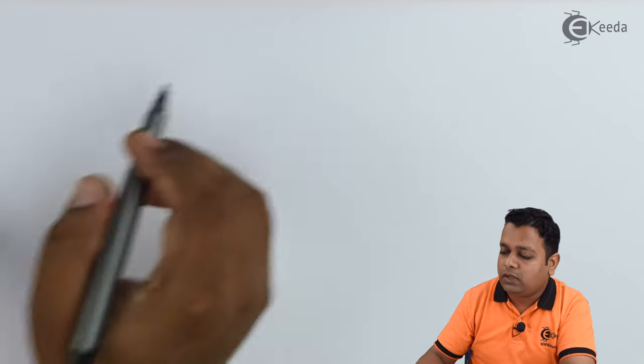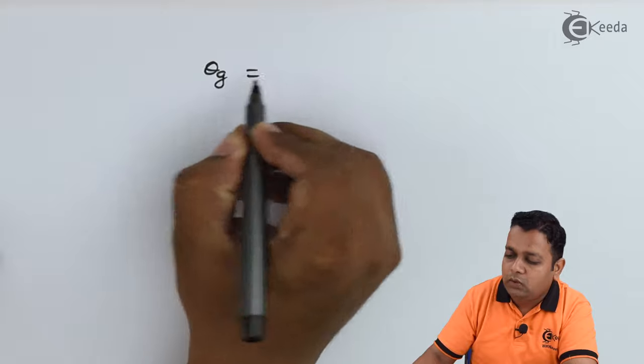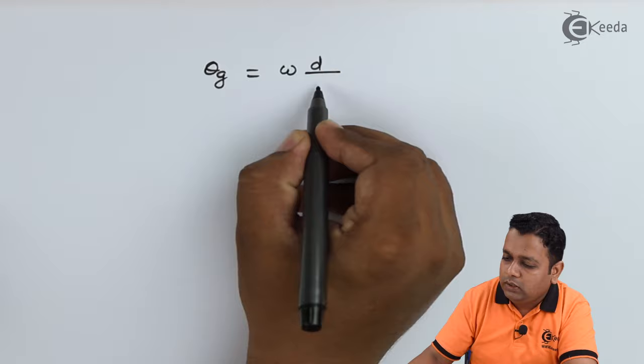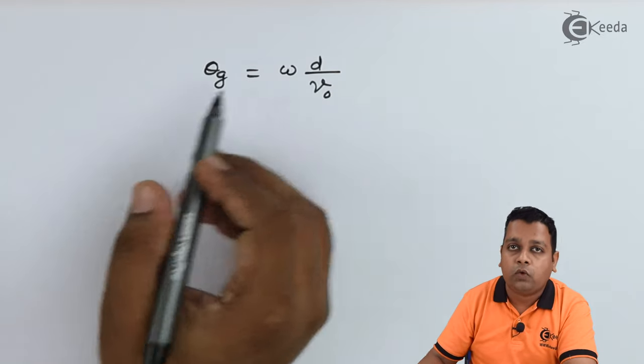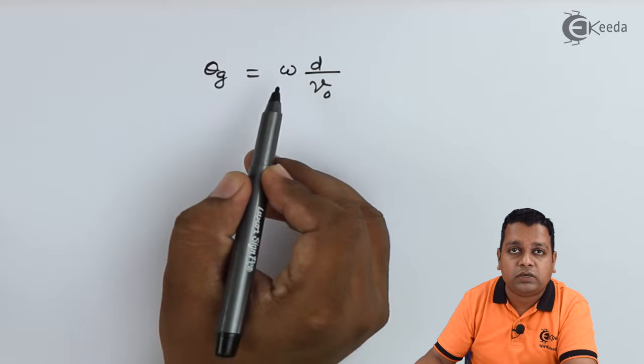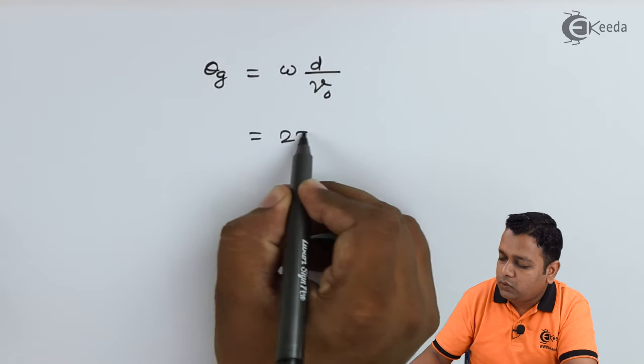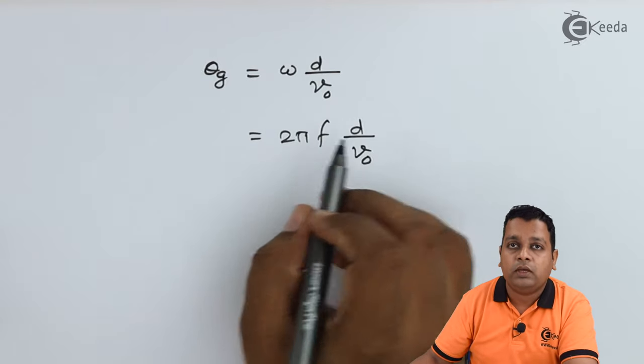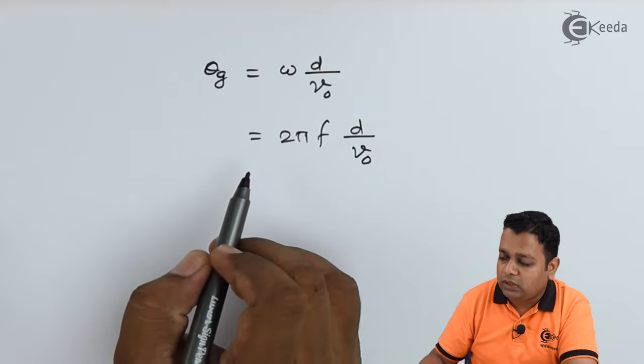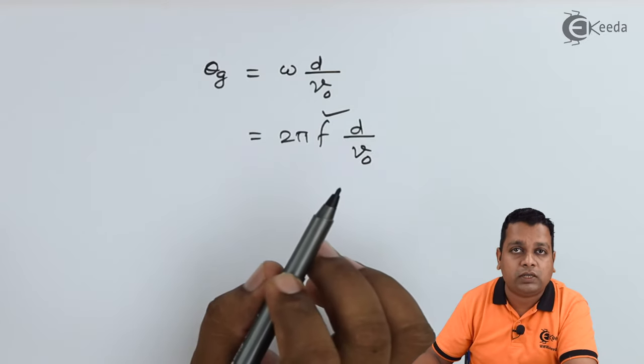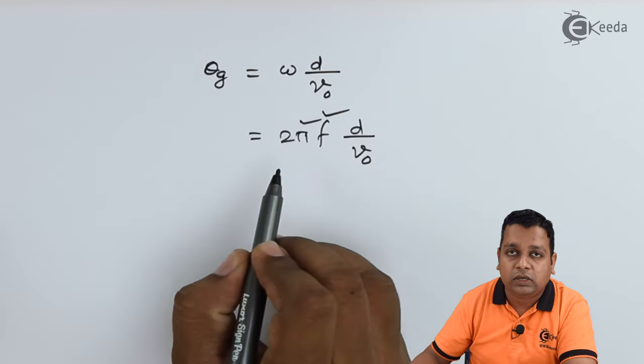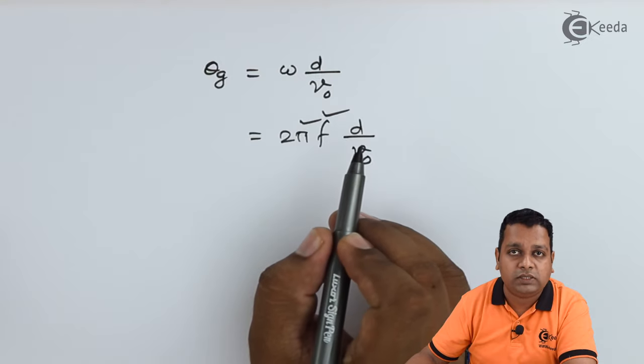In order to obtain the value of gap transit angle, we make use of formula θ_G = ωd/V0, where ω is the angular frequency that we can express in terms of 2πf. So we can write θ_G = 2πf·d/V0. As per the problem statement we have noted the given details: operating frequency f is 5 gigahertz, so this value is available to us.